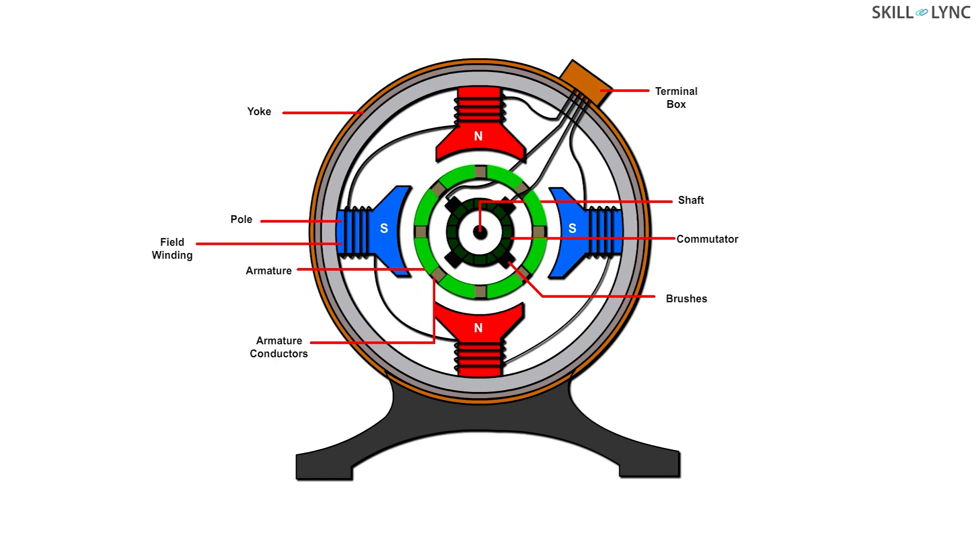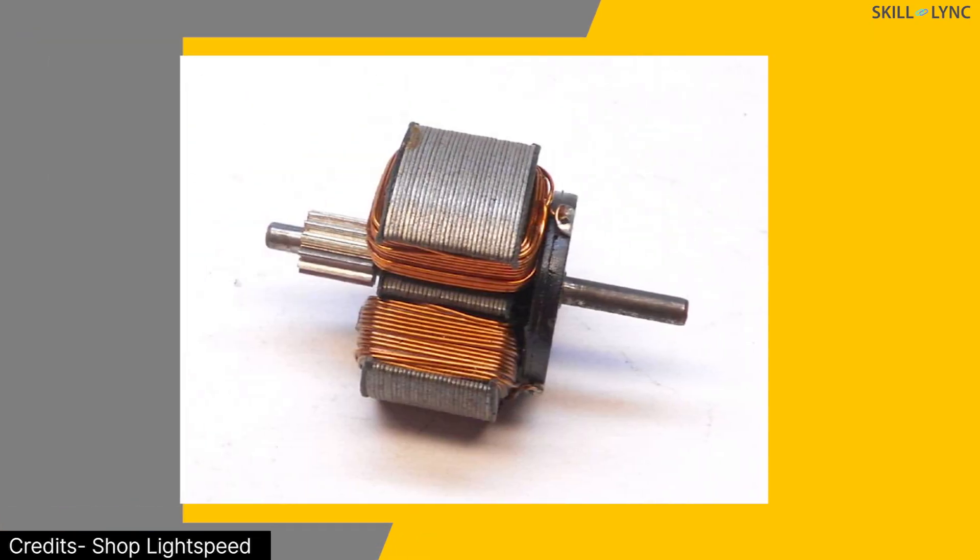On the inner side, you can see an almost round structure which is not connected to the pole. This is called the armature. The armature is made up of the armature core and armature windings. The armature core is the rotor of the DC motor. It is a cylindrical structure with air ducts to allow axial airflow for cooling purposes.